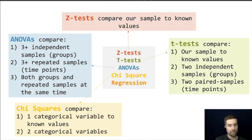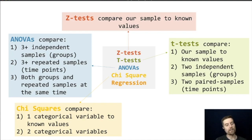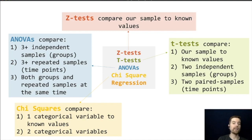When it comes to chi-squares, those compare one categorical variable to known values — similar to a one-sample t-test where we know what the group should look like. Or, even more commonly, we can compare two categorical variables to see if they are related. For example, a two-level group and a three-level group, and we compare them to see if the two grouping variables are related to each other.